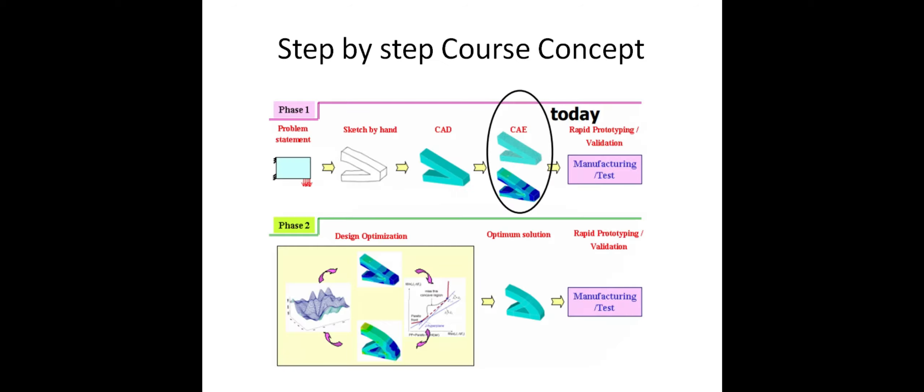Now let's start. In finite element method, what are the steps involved? We have three or four phases. The first phase is phase one. In phase one we have problem statement — what type of problem we are going to consider: either structural, thermal, electrodynamic, or fluid problem. That must be clearly defined.